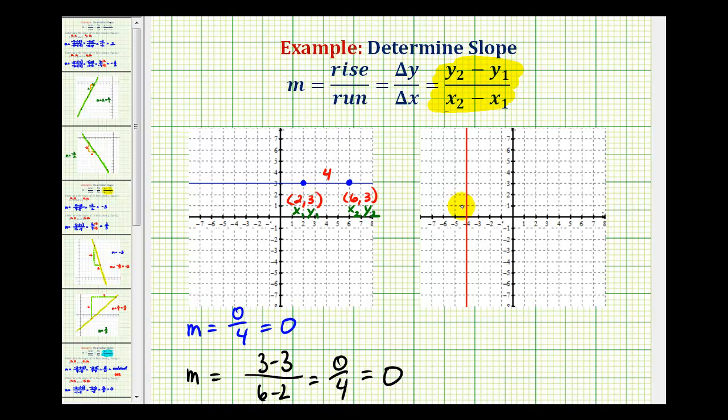Now, if we apply the same technique to a vertical line, let's say we select this point here and this point here. Well, this point would have the coordinates negative 4, 6, and this point would have the coordinates negative 4, 4.